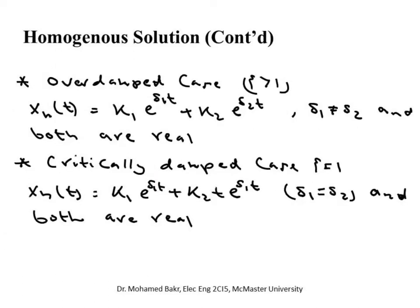For the overdamped case (ζ > 1), s₁ and s₂ are distinct real numbers, and the homogeneous solution is x(t) = k₁e^(s₁t) + k₂e^(s₂t). The constants k₁ and k₂ are found from initial conditions. For the critically damped case (ζ = 1), s₁ = s₂, and from the theory of ordinary differential equations, when a characteristic root is repeated, we multiply by t to get the second term: x(t) = k₁e^(s₁t) + k₂t·e^(s₁t).